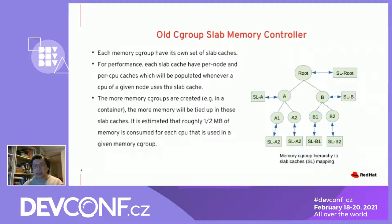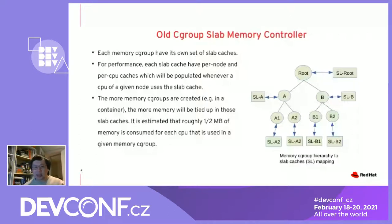It is estimated that in a modern system or modern distro, roughly half a megabyte of memory will be consumed for each CPU used in a given memory cgroup, give or take, depending on the exact load you are running. So that can be quite a lot of memory.